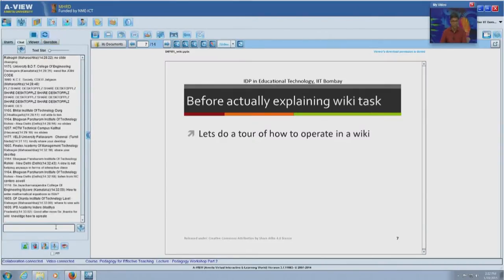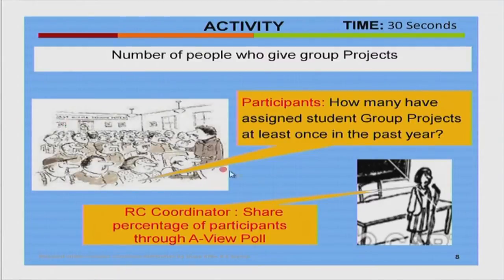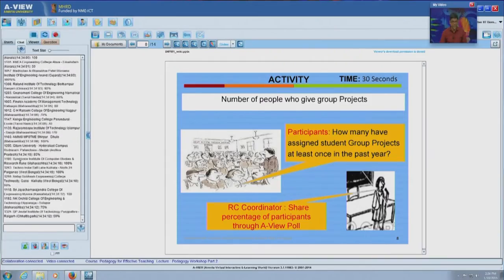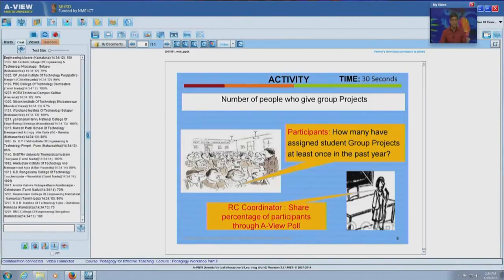We will now look at how many of you have assigned group projects at least once in the past year. RC coordinators share the result through the AVU poll — if 50% of you have done group projects, put in 50%. The polling results show the number varies from 40 to 100 percent, which means several of you use group projects within your course, and wiki is one specific tool you can use for group project implementation.